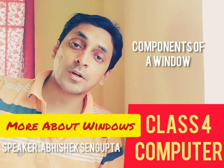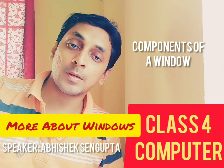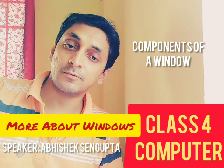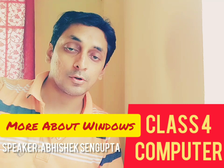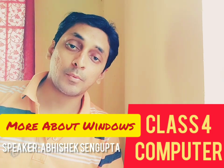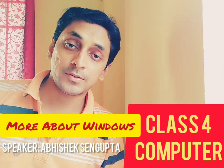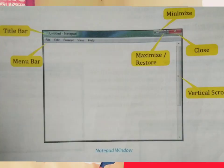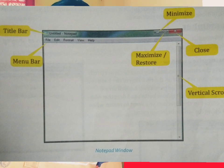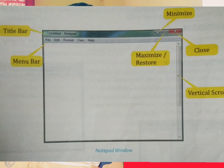A window consists of the following parts: the title bar, menu bar, vertical scroll bar, and control buttons. The title bar is the blue bar at the top of the window; it displays the title of the program along with the file name. The menu bar is below the title bar and displays the menu names, which can be clicked to open different options available for working on a program.